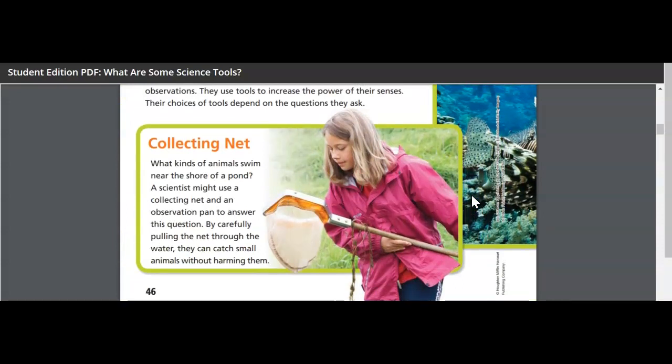Collecting net. What kinds of animals swim near the shore of a pond? A scientist might use a collecting net and an observation pan to answer these questions. By carefully pulling the net through the water, they can catch small animals without harming them.